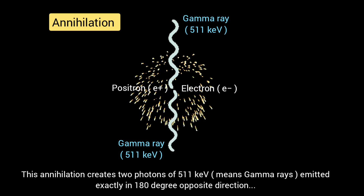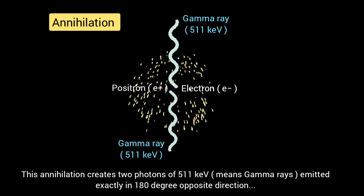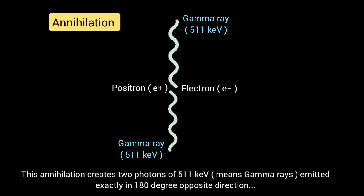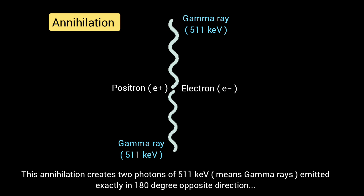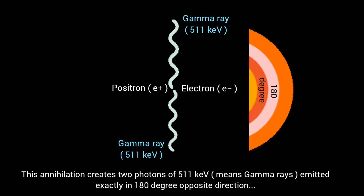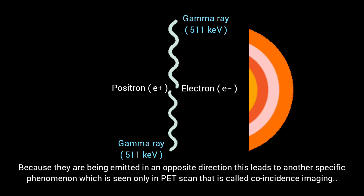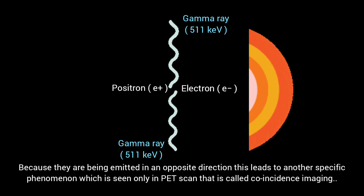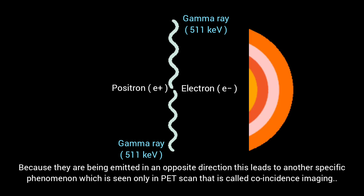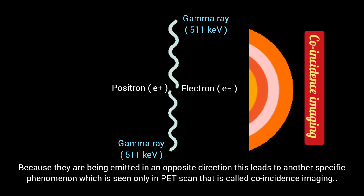This annihilation creates two photons of 511 KeV emitted in exactly opposite directions, 180 degrees apart. Because they are emitted in opposite directions, this leads to a specific phenomenon seen only in PET scanning, called coincidence imaging.